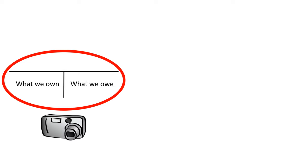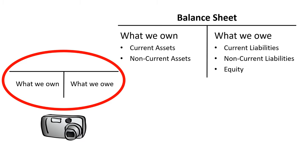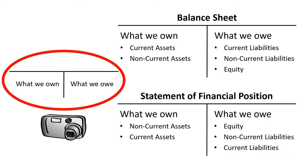What is owned is on the left, what is owed is on the right — it's like a picture! Most companies call this overview of what is owned and what is owed a balance sheet. Some call it a statement of financial position.